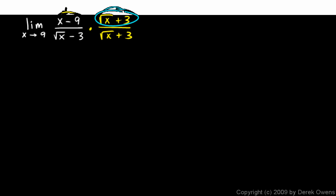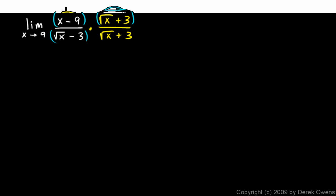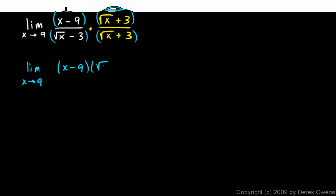I got this expression, square root of x plus 3, because it is the conjugate of this. And when we do this, we'll do a FOIL up top here and a FOIL on the bottom. So this will become the limit as x approaches 9. Up top, let's leave it in factored form — x minus 9. We're not going to do a FOIL up there, but we will do a FOIL on the bottom.